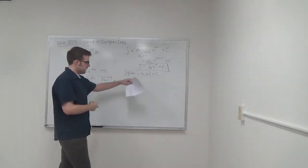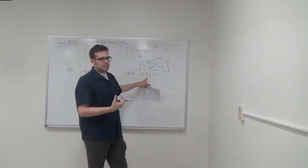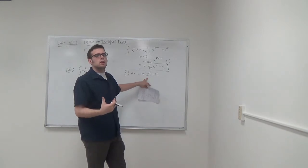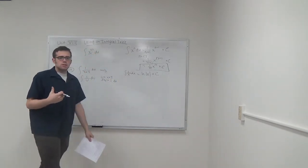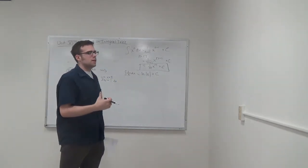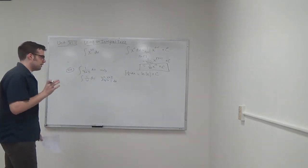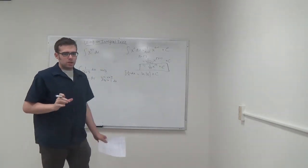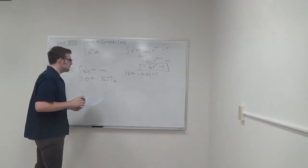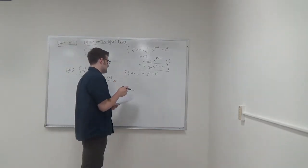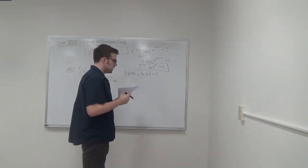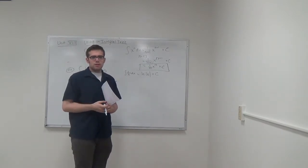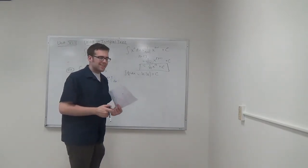And the reason why I put the absolute value is because you can't evaluate a natural log, you can't evaluate a log of a negative number. So it has to be absolute value in order for the function to be considered continuous.